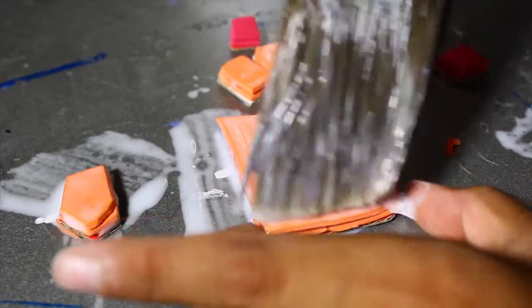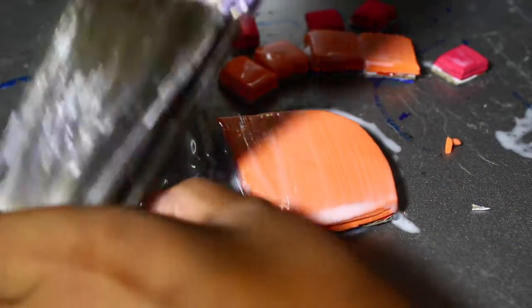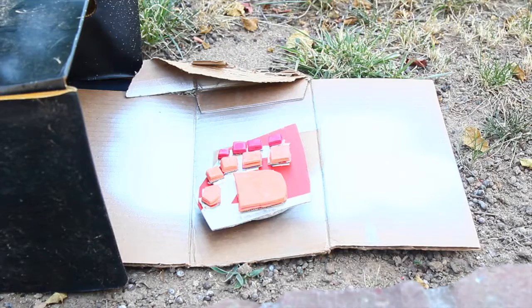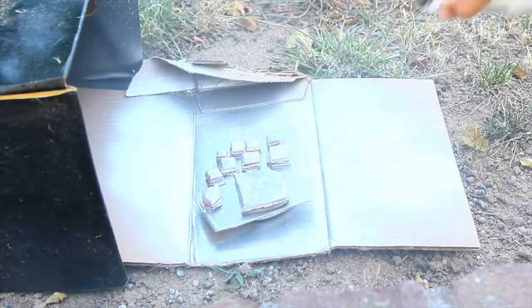Now you want to put some PVA glue on it, or plastic dip it. Now you want to spray paint your hand pieces aluminum or silver.